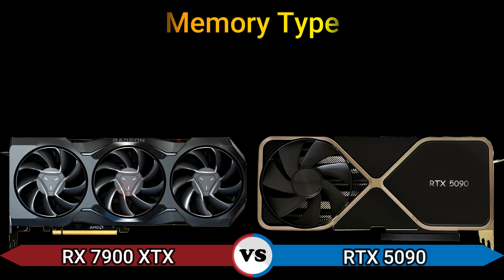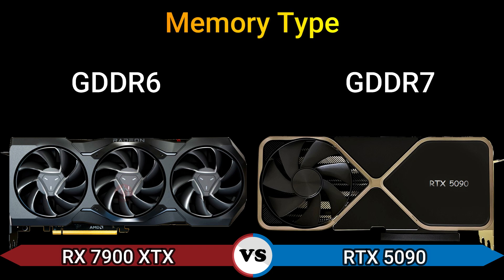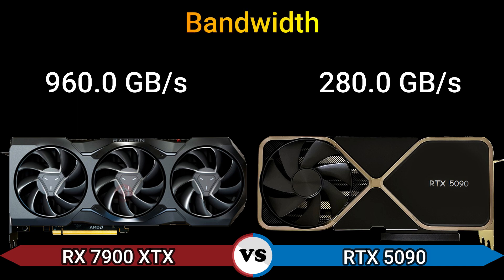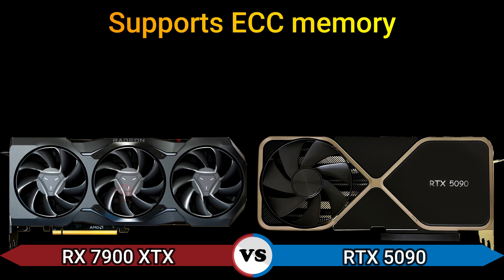Memory type: GDDR6 and GDDR7. Memory bus: 384-bit and 448-bit. Bandwidth: 960.0 GB/s and 280.0 GB/s. Supports ECC memory: Yes.